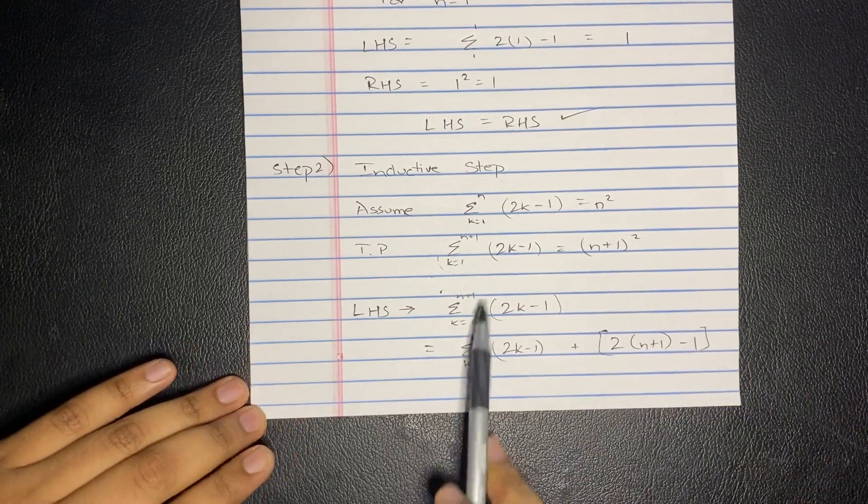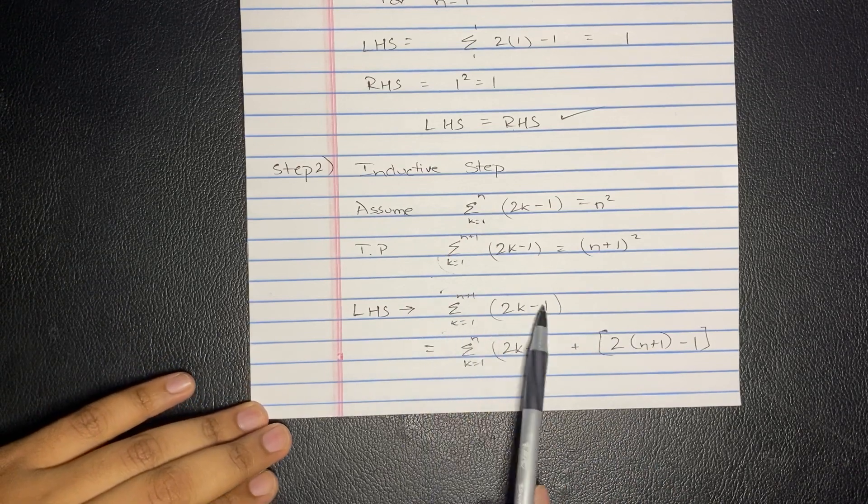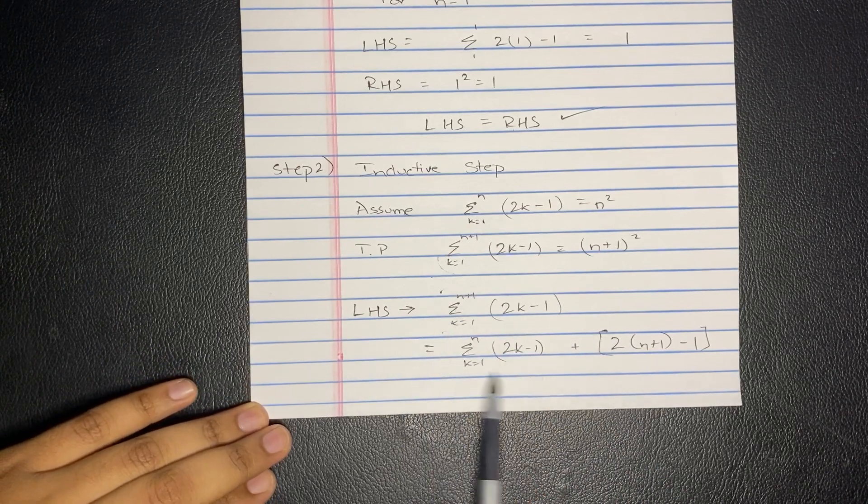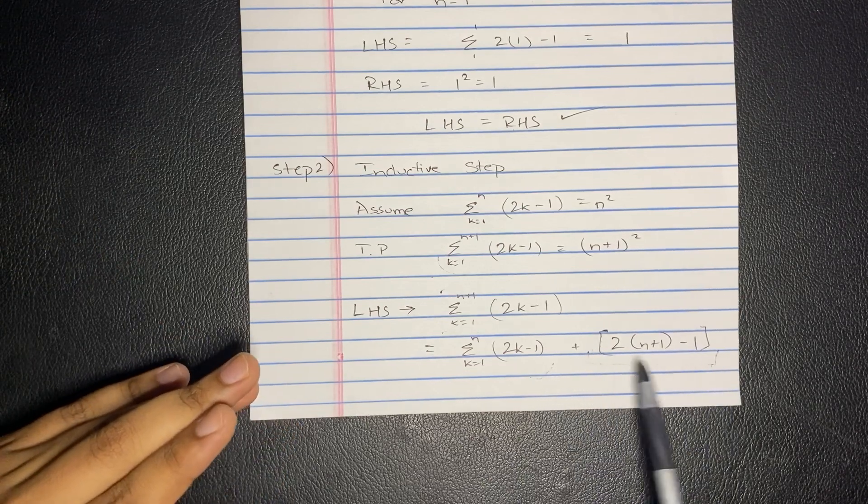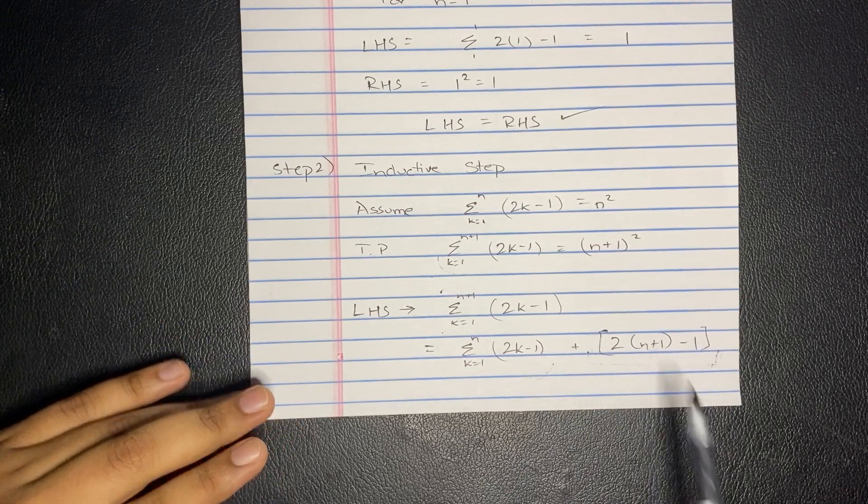It's going to make more sense when I write it down. So summation of k equals 1 to n, 2k minus 1, plus 2 times n plus 1 minus 1. This is just this plus the next part of the series, which is going to be for n plus 1. k is replaced by n plus 1.